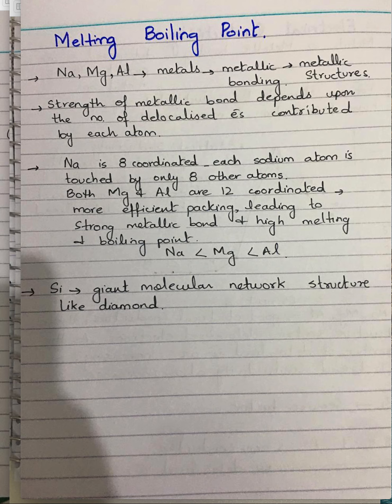Regarding melting and boiling points of Period 3 elements, the first three elements — sodium, magnesium, and aluminium — are metals with metallic bonding and metallic structures. The melting and boiling point rises across these three metals from sodium to aluminium because of the increase in the strength of the metallic bond. The strength of the metallic bond depends upon the number of delocalized electrons contributed by each atom.